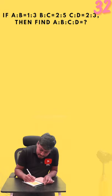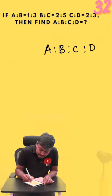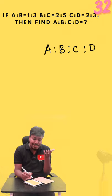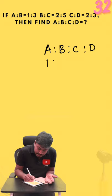So use the same shortcut here. We have to find what is A:B:C:D. According to the given question, A:B is 1:3, so write 1:3 here.